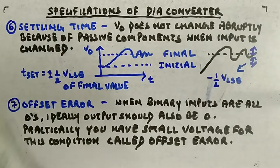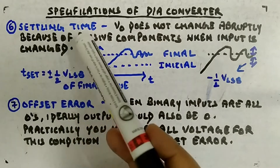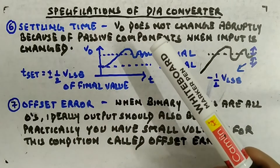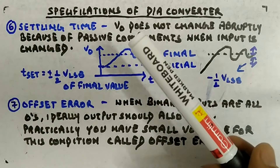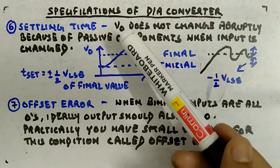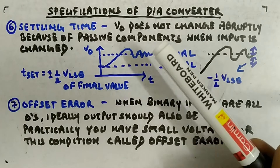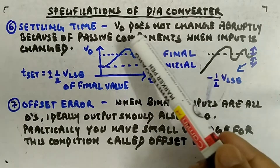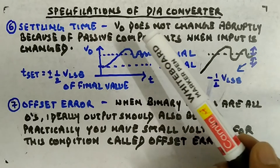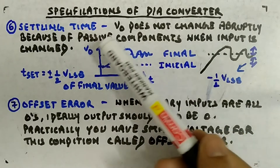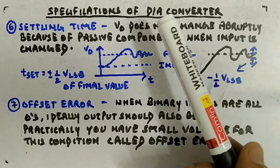Settling time: whenever you change the input, the output will not change abruptly — ideally it should, but practically it will not, because of some passive and active components involved.